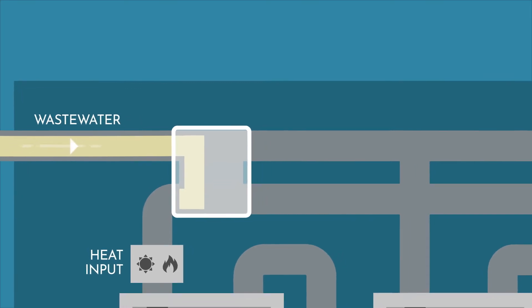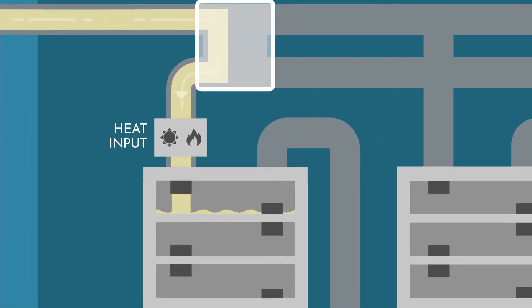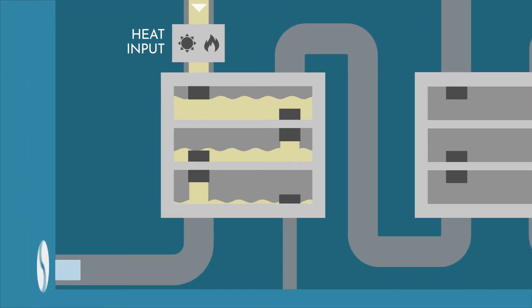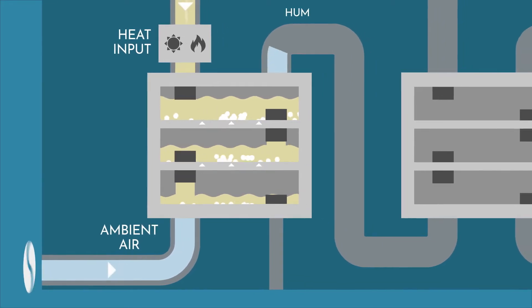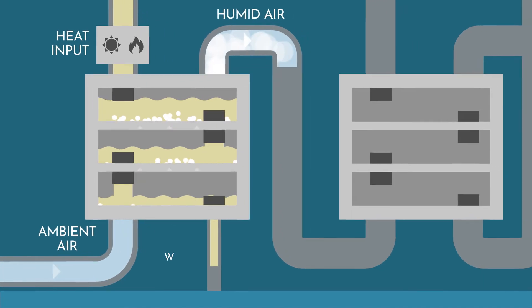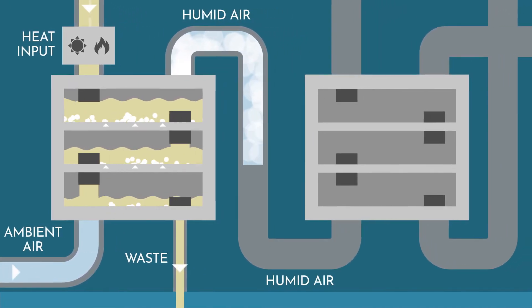First, wastewater is heated and pumped into the top of a humidifier. Dry carrier gas, typically ambient air, is simultaneously introduced at the bottom. As the two interact, the gradient of temperature and concentration heats the air and turns the water into vapor, leaving unwanted contaminants behind.